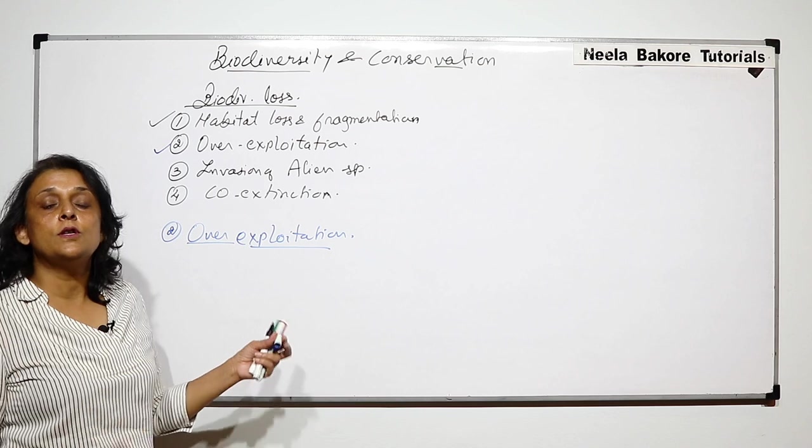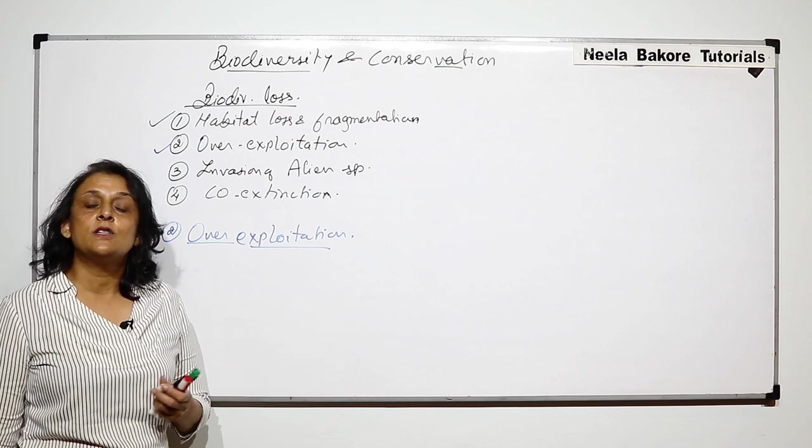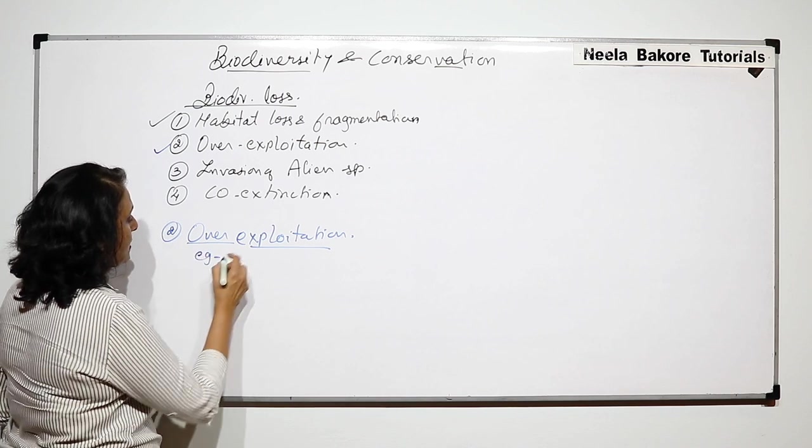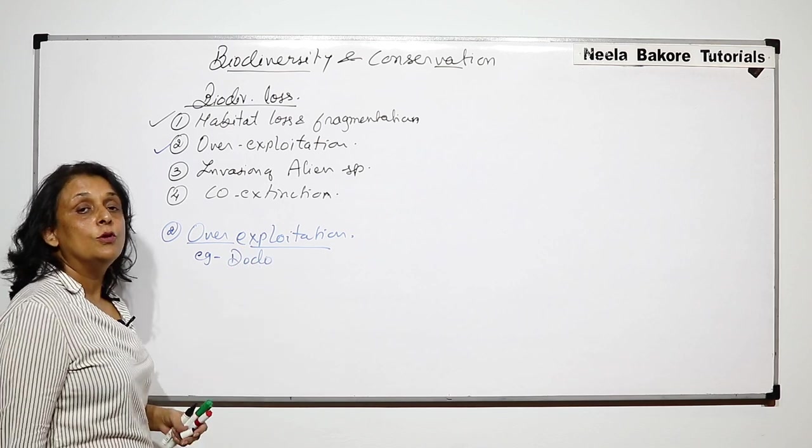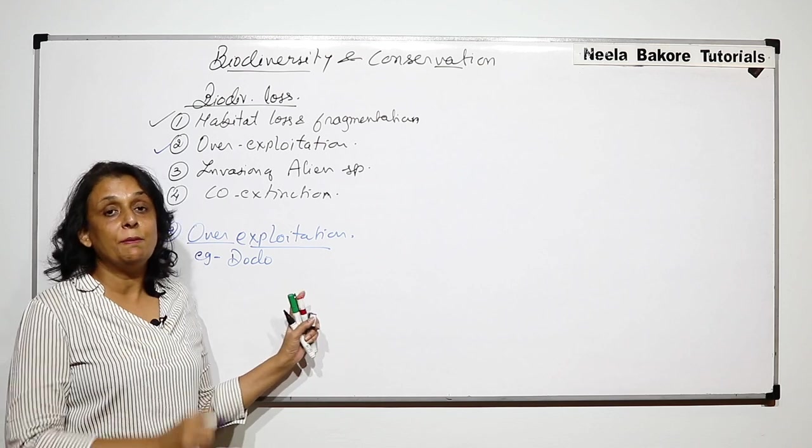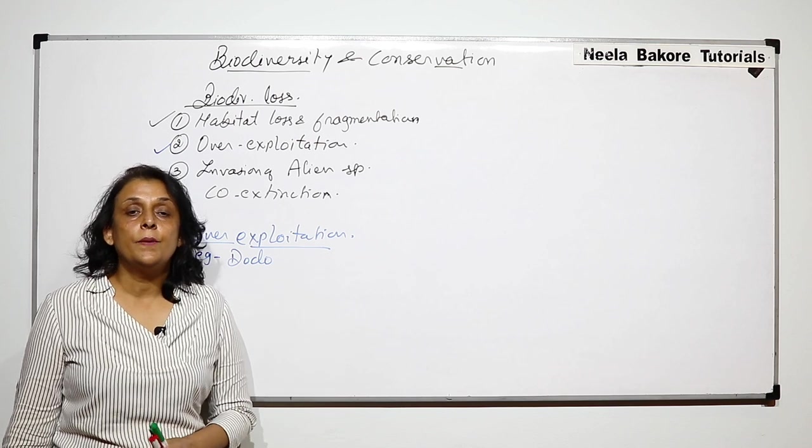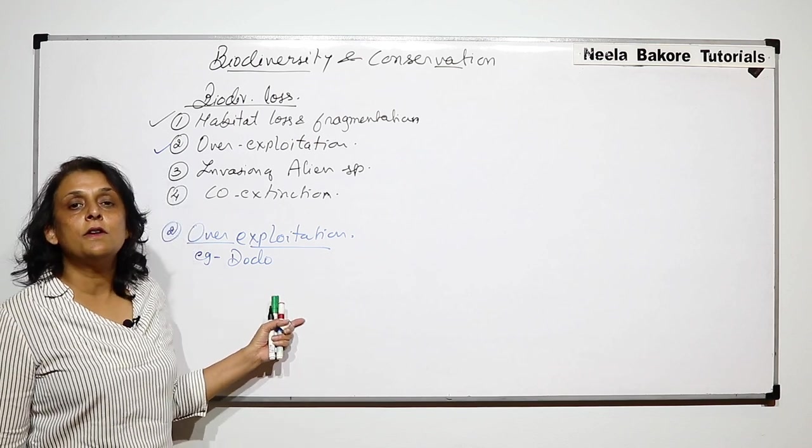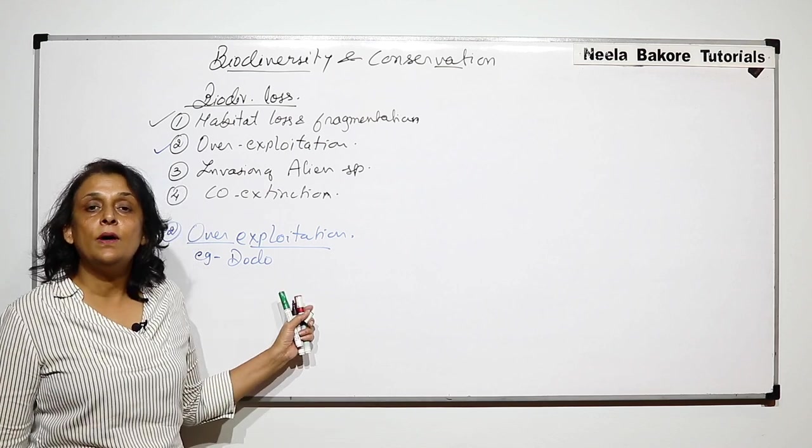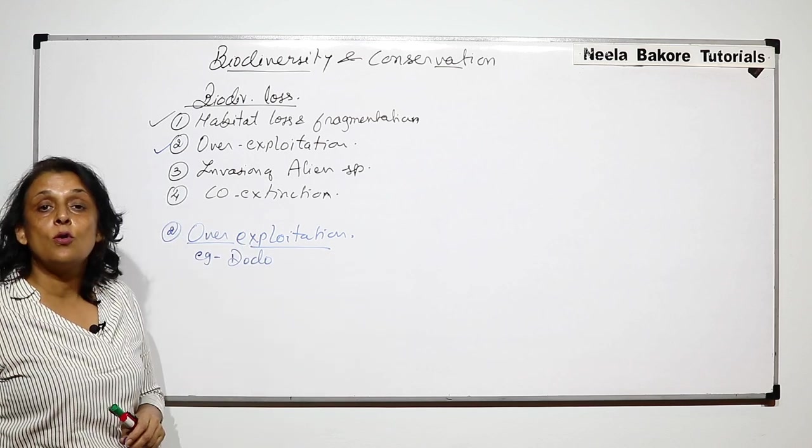Because of this over-exploitation in the last few hundred years, some species have been lost or are now extinct. Some examples are Dodo. Dodo was a bird in Mauritius that was killed for its meat to such an extent that the bird got extinct. We will take this example of Dodo in co-extinction also.